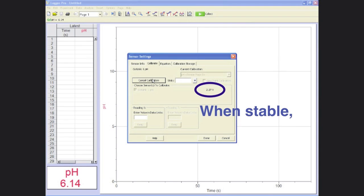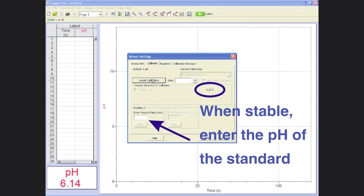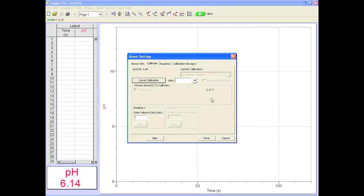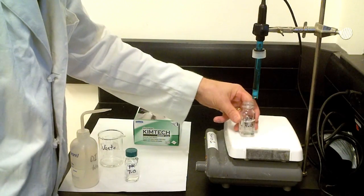On the computer screen, check out the voltage reading and when it stops freaking out, enter the pH of the buffer you're using in the box. Press keep and rinse the probe.